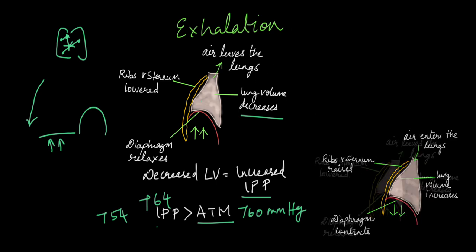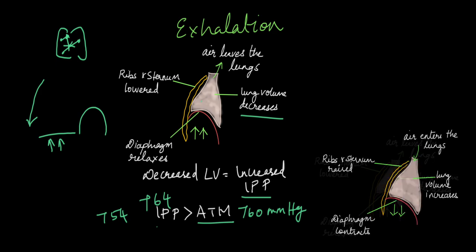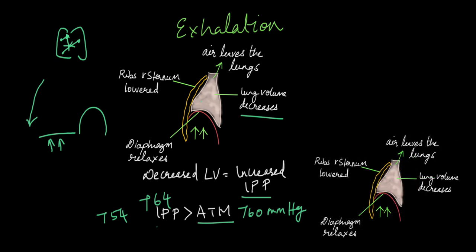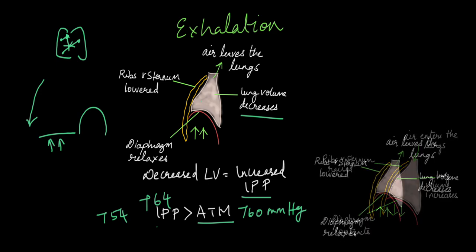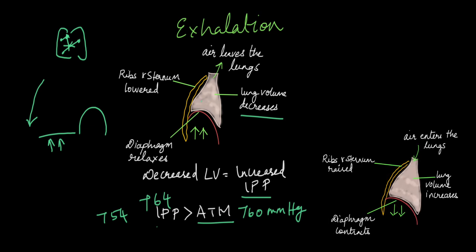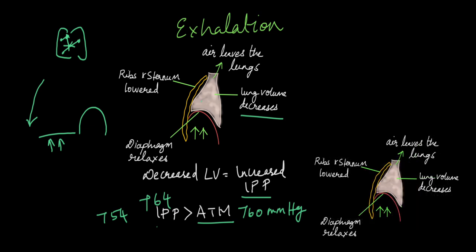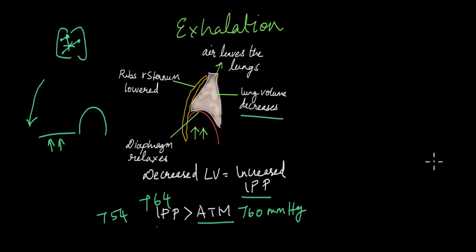This animation shows the mechanism of breathing — how the diaphragm contracts and relaxes and how lung volume increases and decreases during inhalation and exhalation. The increase in lung volume causes air to enter the lungs, while the decrease in lung volume causes air to leave the lungs.